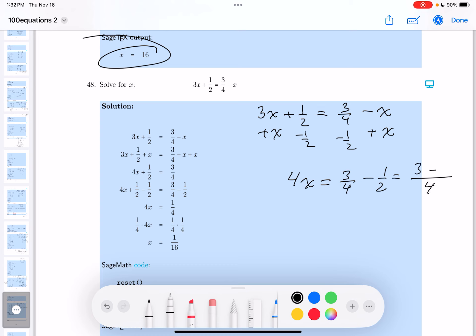So this would be 3 minus, well, what times 2 would give you 4? That's 2. So it would be 3 minus 2. So you get 4x equals 3 minus 2 is 1. You get 1/4.